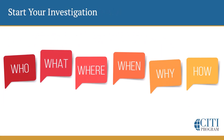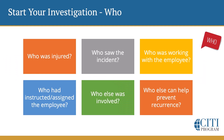So we start our investigation using the same method that we learned in grammar school — the who, what, where, when, why, and how method. We start with our who's: Who was injured? Who saw the incident? Who was working with the employee? Who had instructed or assigned the employee? Who else was involved? And who else can help prevent the reoccurrence? These are just sample questions — you don't have to use all of them. It really depends on your accident or incident as to the questions you're going to ask the interviewee.